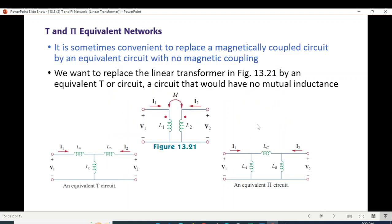So first of all, why we need T and Pi. This is the transformer circuit, this is T circuit, and this is Pi or delta circuit. It is sometimes convenient to replace a magnetically coupled circuit by an equivalent circuit with no magnetic coupling. That is, it makes a solution easier. You want to replace the linear transformer in this figure by an equivalent T circuit or Pi circuit.